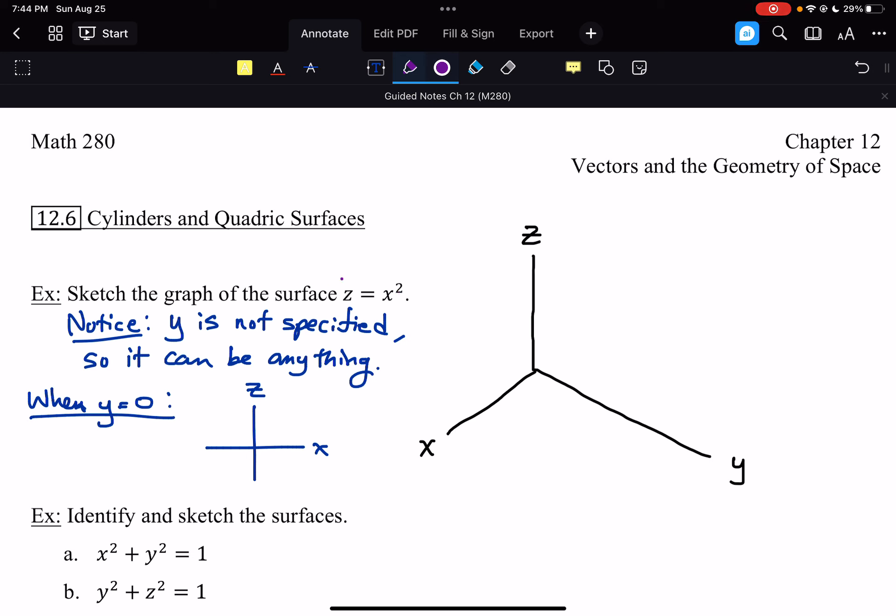So when Y is 0, we're in the XZ plane, z equals x squared. This is a parabolic curve. So z equals x squared, where x is the input, z is the output. So we get something like this. Just a typical parabola, typical parabolic curve, but with the x and z axes, not x and y.